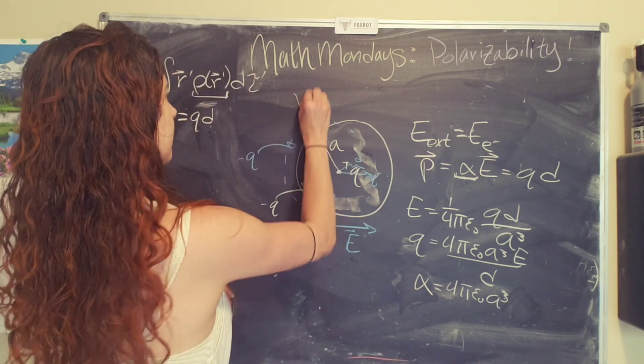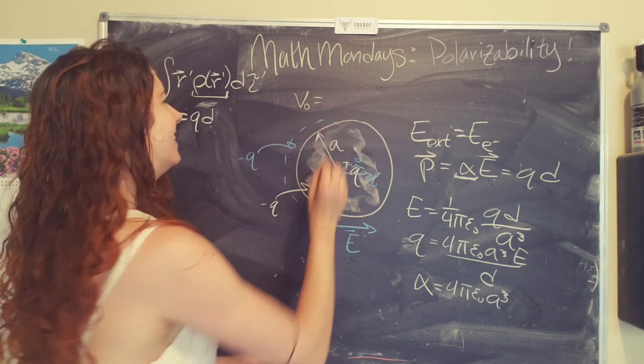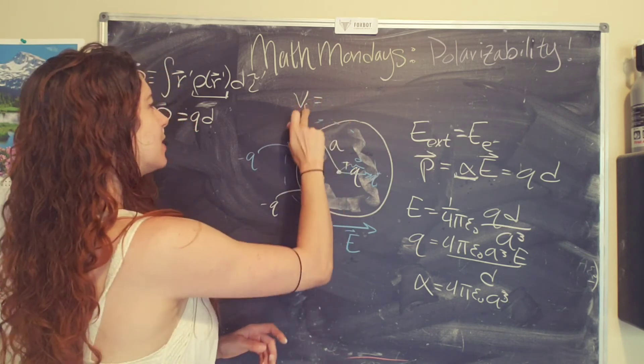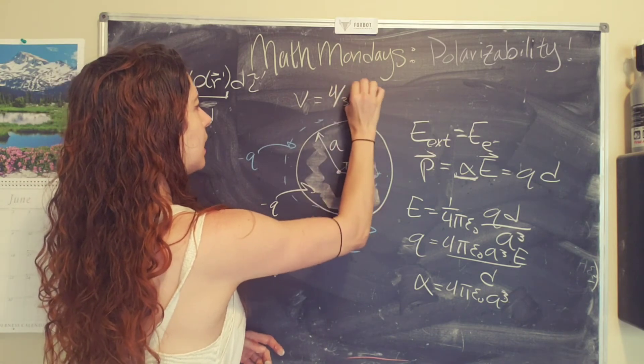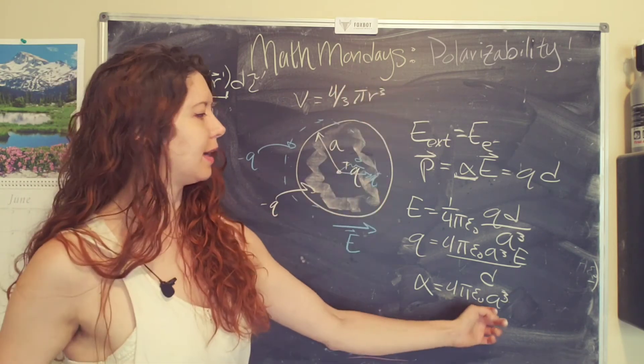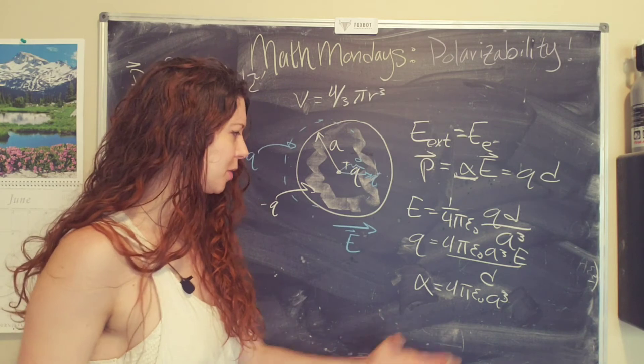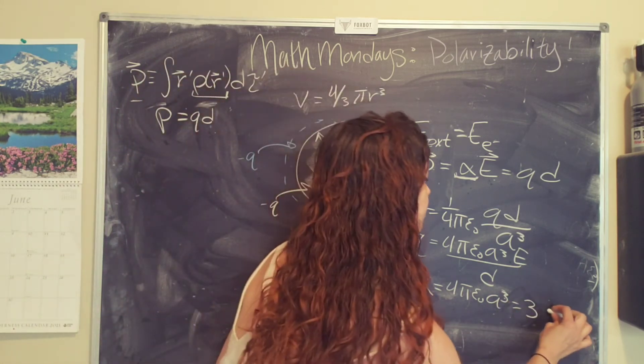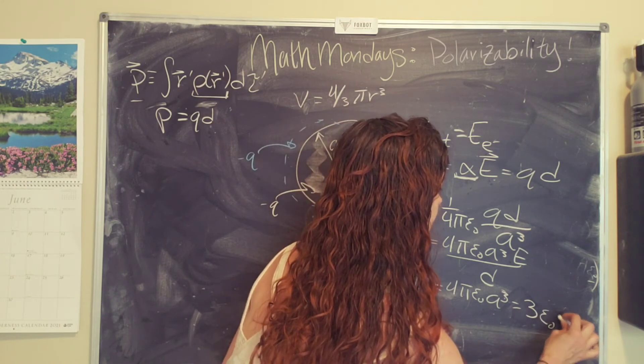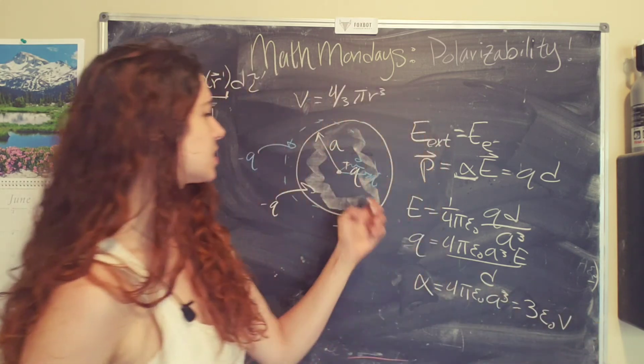Hey, wait a second. The volume of a sphere looks like V. The volume of a sphere is four thirds pi r cubed. Hey, that's basically the volume of a sphere. But we have an extra factor of three in there. So we end up with three epsilon naught times the volume of the sphere.